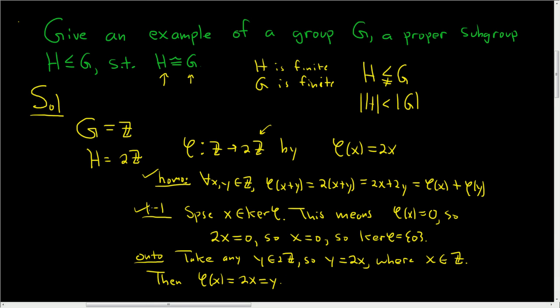So we've got that. It's a homomorphism. It's one to one. And it's onto. So what does that mean? We have an isomorphism, right? So Z is isomorphic to 2Z.